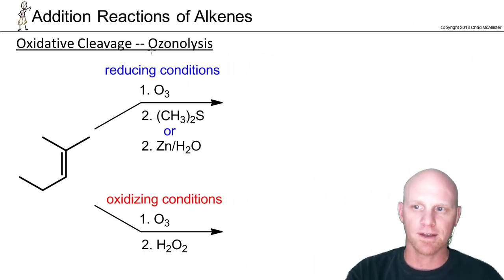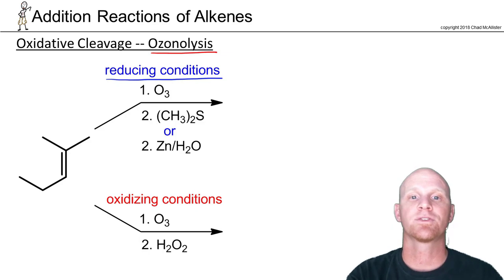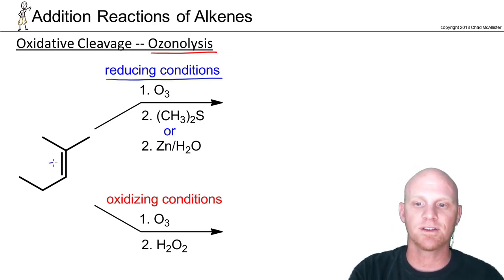So let's take a little deeper look at predicting products for ozonolysis reactions. And it turns out we really have two options. There's reducing conditions, which we kind of just studied, as well as oxidizing conditions. And if we look at the reducing conditions first...